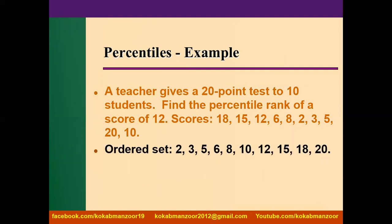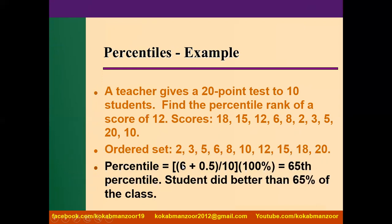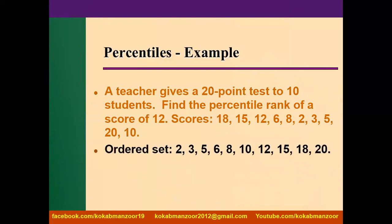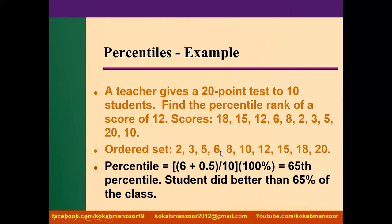The first step is to arrange the data in ascending order: 2, 3, 5, 6, 8, 10, 12, 15, 18, 20. Now applying the formula: X is 12, and there are 6 values below 12. So: 6 plus 0.5, divided by 10 (total students), equals 6.5 divided by 10, which is 0.65.